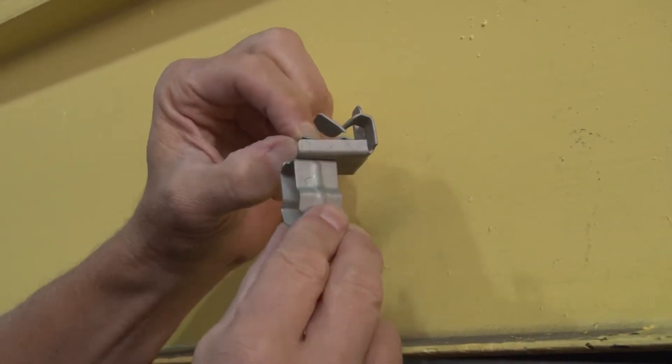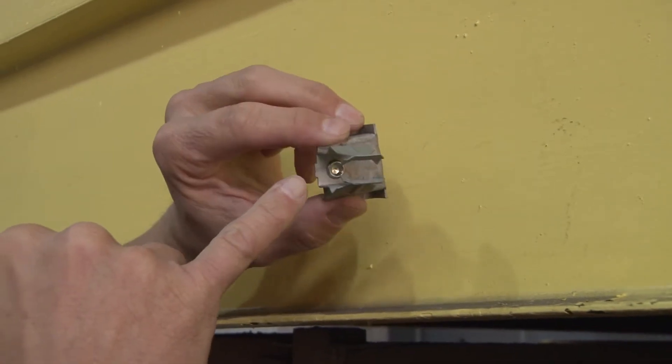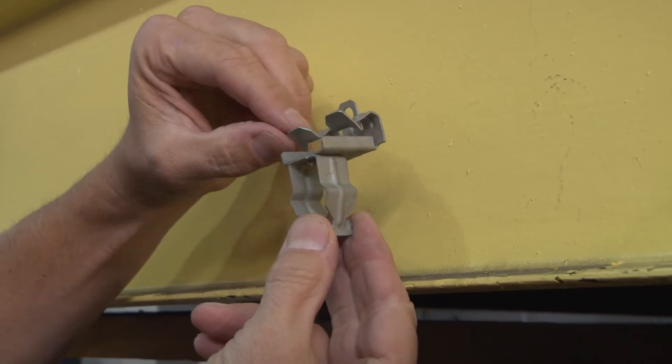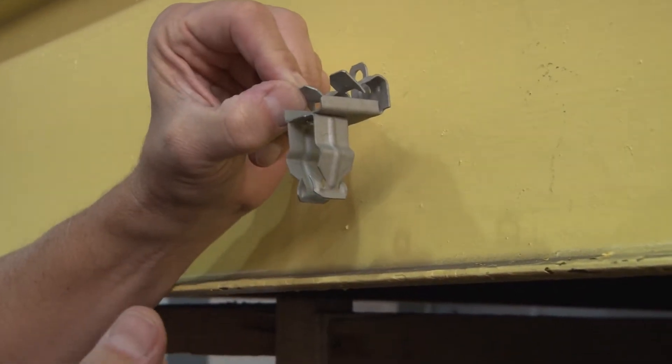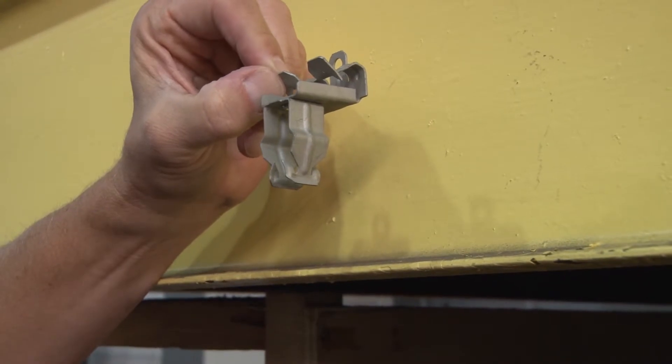On this particular model, we've riveted on a snap-on conduit hanger, so literally with just a hammer, you can hammer on the beam clamp, snap in the conduit, and you're done.